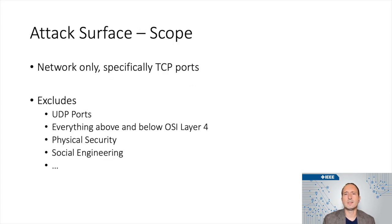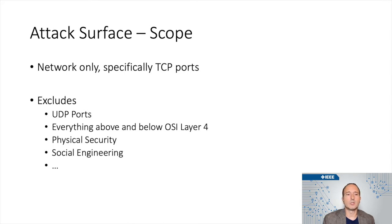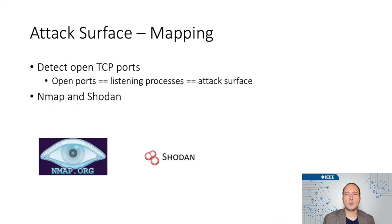There are many different ways and dimensions to define this attack surface, but for our research, we just looked at the network only — specifically the TCP ports. This excludes everything else: UDP ports, things like SNMP, and the less reliable forms of transmission. Basically, everything above and below OSI layer 4. No physical security, no social engineering, not the application level things. We just focused on those open and closed TCP ports. To map that, we detect the open TCP ports on an attack surface, because an open port means a listening process, and a listening process is part of the attack surface.